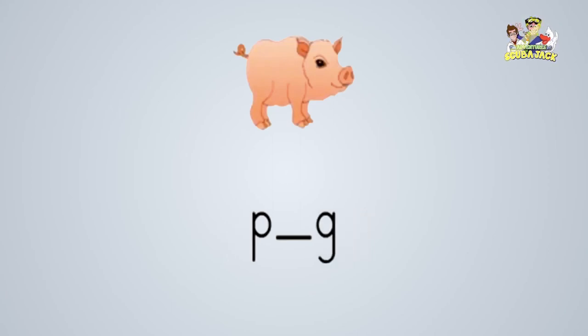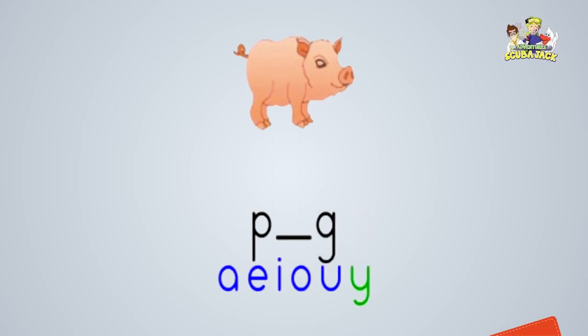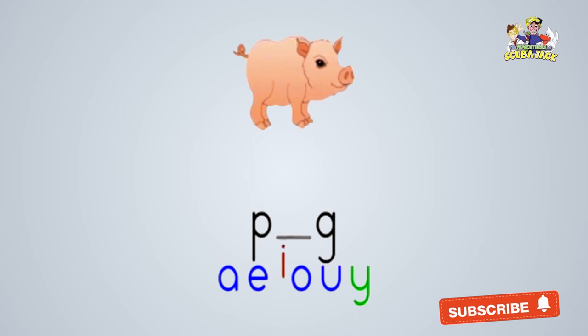This is a pig. Can you say pig? Pig. What is the missing vowel? Yes, that's right. The missing vowel is I.